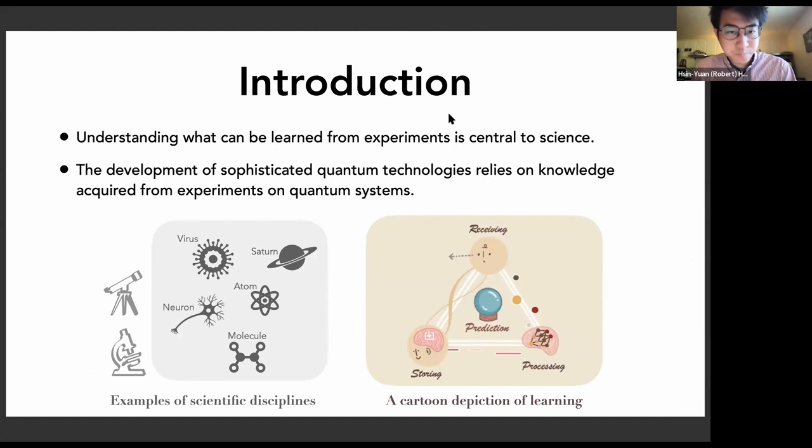Understanding what can be learned from experiments is central to many scientific disciplines. By obtaining information from experiments, we can understand the physical world and make accurate predictions in different scenarios. In particular, the development of sophisticated quantum technology relies on knowledge acquired from experiments on quantum systems.